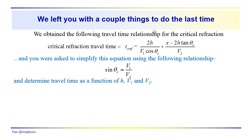Last time we left you with a couple of things to do, and we had obtained this relationship for the critical refraction. We have the critical refraction time equal to 2h over v1 times the cosine of theta critical, plus x — the source-receiver distance — minus 2h, where h is the thickness of the layer. We're working with the two-layer problem, and the tangent of theta critical over v2.